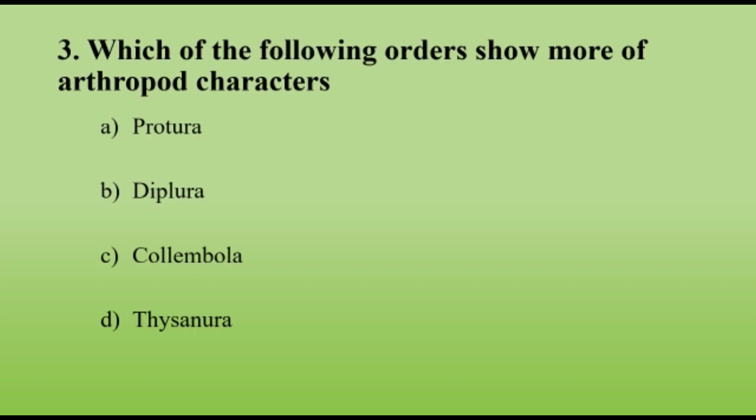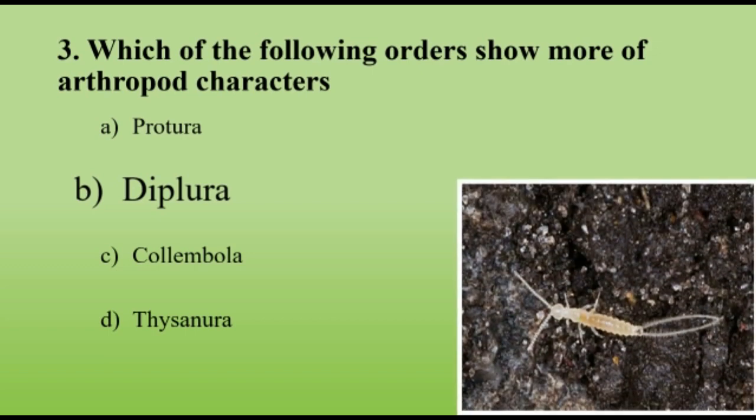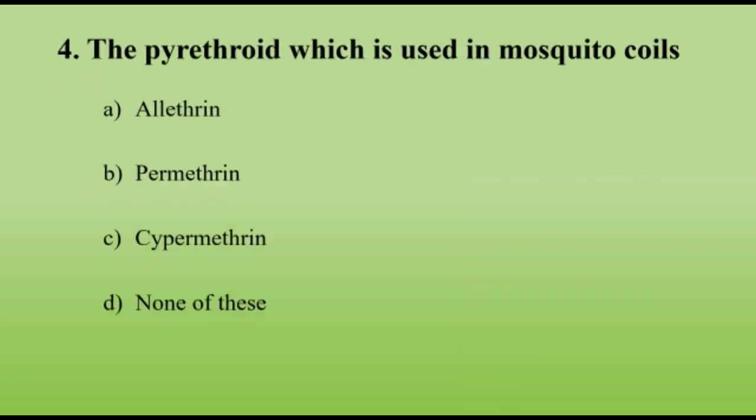Which of the following orders shows more of arthropod characters? Diplurans. They are also called as Japigids and they have multi-segmented antennae.